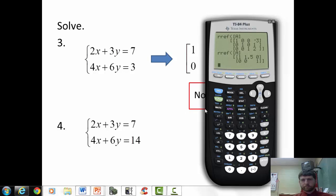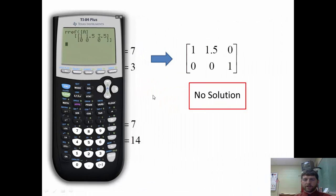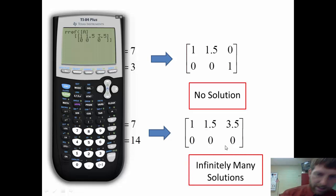Well, if we look at this next one, let's key it in real quick. Second matrix edit. Two rows, three columns. Two, three, seven, four, six, fourteen. Second quit. Second matrix math. RREF. Of second matrix A. This one produces a different bottom row. We still didn't get the 1, 1 for our diagonal like we wanted with zeros in the other spots. Instead, we got all zeros for the bottom row. Well, this says 0x plus 0y equals 0. Well, since 0 is always equal to 0, we would say that there are infinitely many solutions.